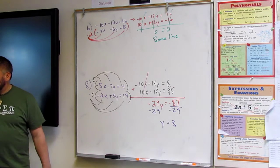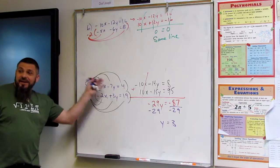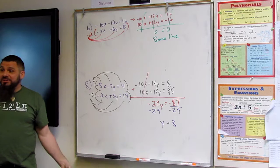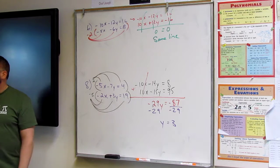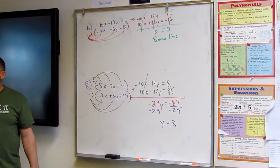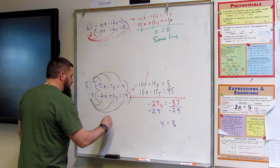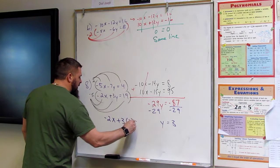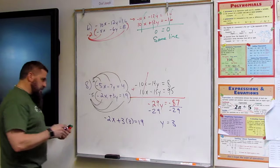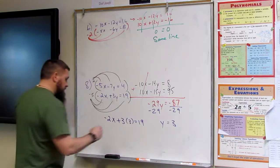Okay. And then plug it in. Now plug it in. Yeah. I could go through this whole mess again. Or just plug it in. What one do you want to plug in? Top or bottom? This is the bottom. Bottom. Negative two X. Plus three times three. Equals nineteen. Okay. What's three times three? Nine. Okay.